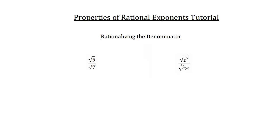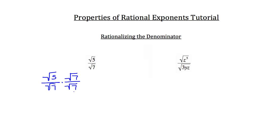I'm going to teach you how to rationalize the denominator. We're going to start on the left-hand side with radical 5 over radical 7. In math, you can't leave a radical on the denominator of a fraction. So if you had root 5 over root 7, we'd want to get rid of that root 7 on the bottom by multiplying both the numerator and denominator by root 7.